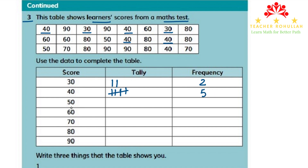For score 50, we look through each row. In the first row we don't have any, in the second row we find 1, and then 1 more elsewhere, giving us 2 students who scored 50. I write 2 in the frequency table.